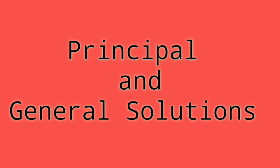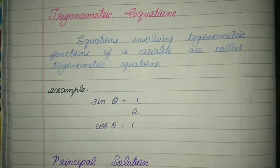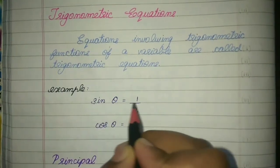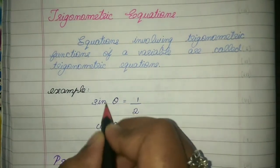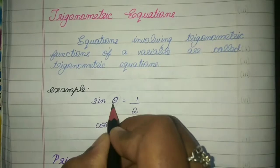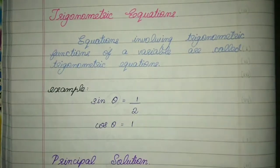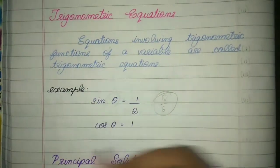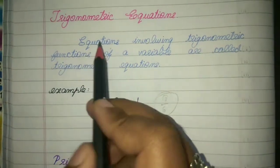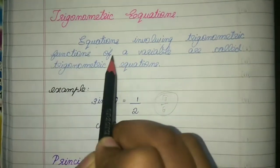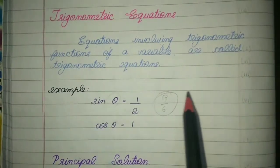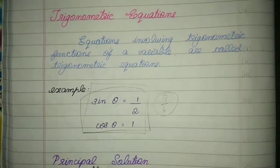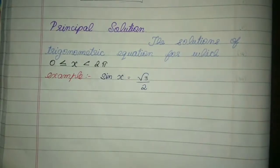So now let us learn about trigonometric equations. What are trigonometric equations? We write sine theta is equal to 1 by 2 and we find the value of theta. If sine is 1 by 2, at which radian is that? It is pi by 6. Finding or writing like this is called a trigonometric equation. Equations involving trigonometric functions of a variable are called trigonometric equations.